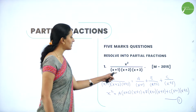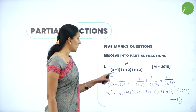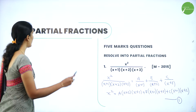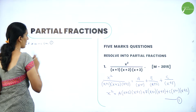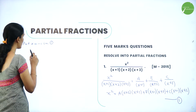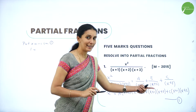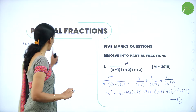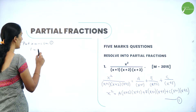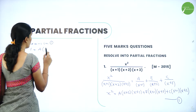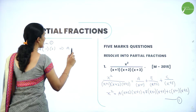Since we have three linear factors, we can equate each to zero to find the values. For the first factor, put x = −1 in equation 1. Then (−1)² = 1, and the B and C terms become zero. We get A(−1+2)(−1+3) = A(1)(2) = 2A. So 1 = 2A, which implies A = 1/2.